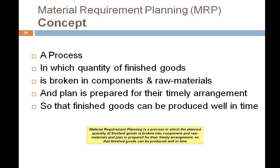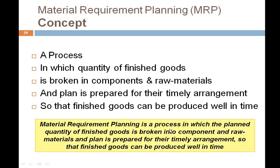To summarize the whole concept: Material Requirement Planning is a process in which the planned quantity of finished goods is broken into components and raw materials, and a plan is prepared for their timely arrangement so that finished goods can be produced well in time. The raw materials, components, sub-components, assemblies, and sub-assemblies are all arranged on time.